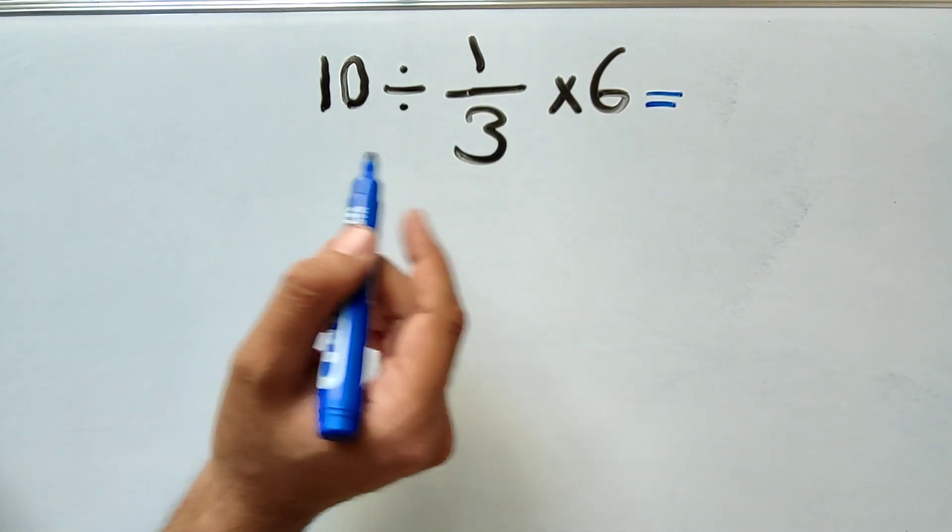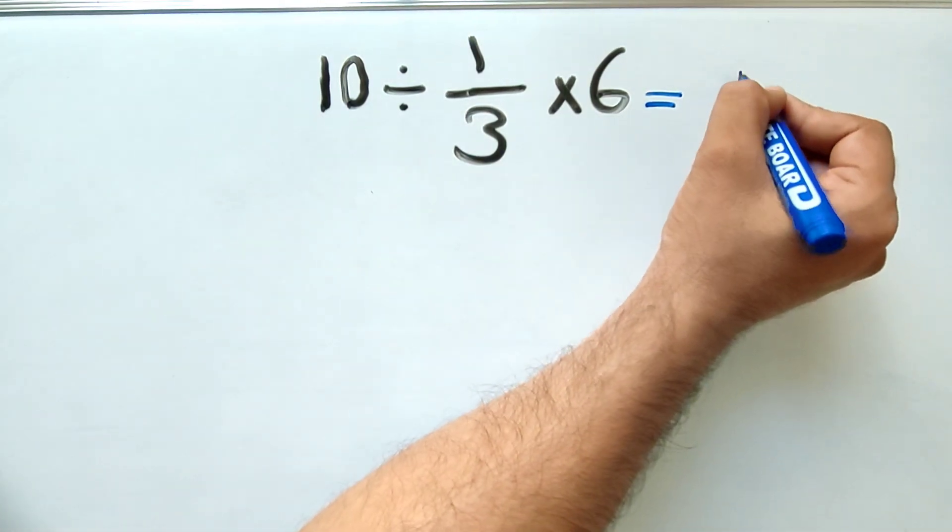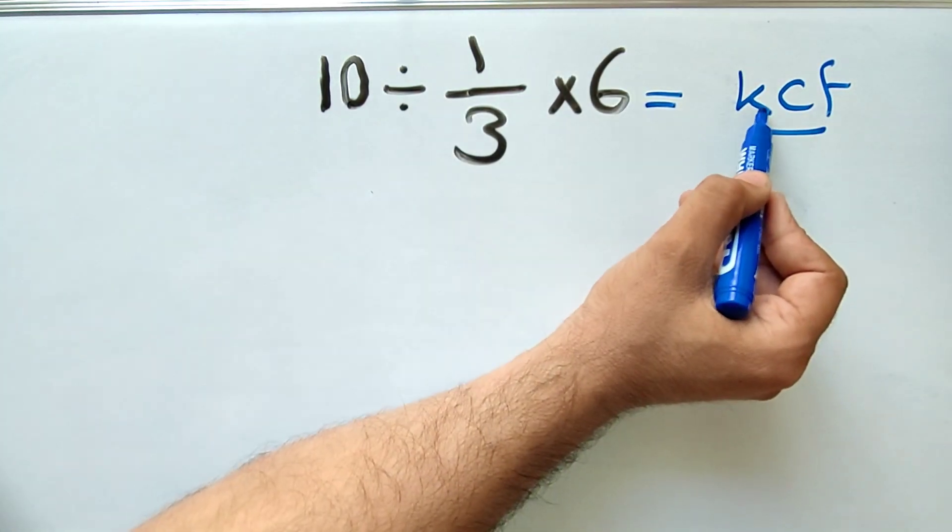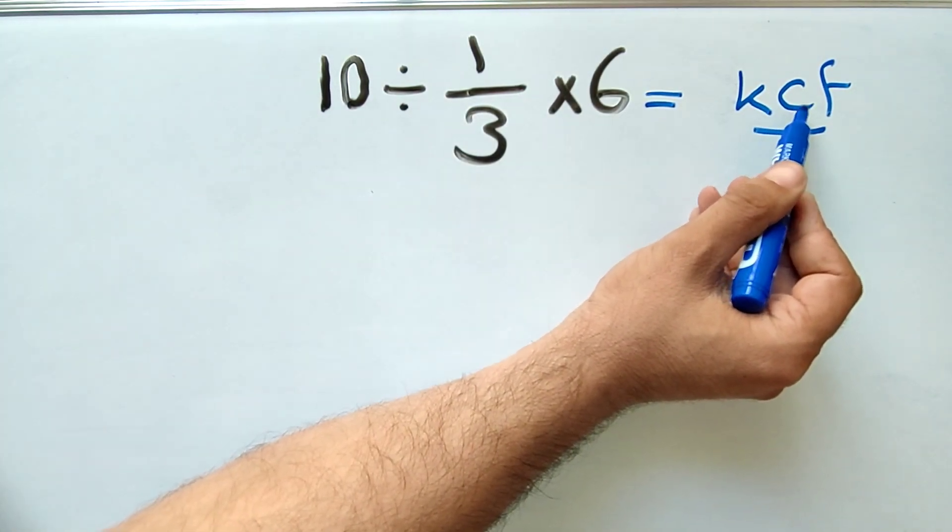Now, according to the rules of mathematics, KCF—that is Keep first fraction, Change division to multiplication, and Flip the next fraction.